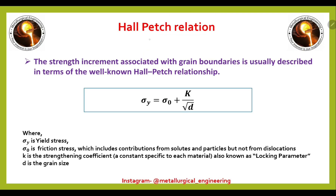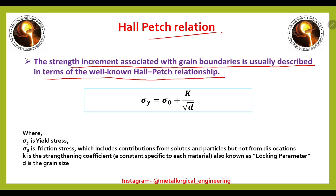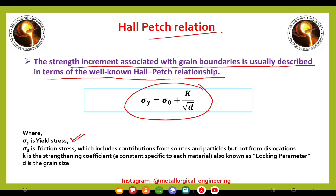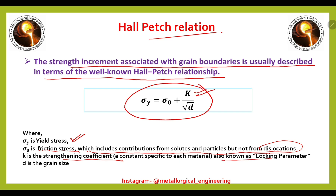Now we will see the Hall-Petch relation. The strength increment associated with the grain boundary is usually described in terms of the well-known Hall-Petch relation: σy = σ0 + K/√D, where σy is the yield stress, σ0 is the frictional stress — which includes contributions from solutes and particles but not from dislocations — K is the strengthening coefficient (a constant specific to each material, also known as the locking parameter), and D is the grain size.